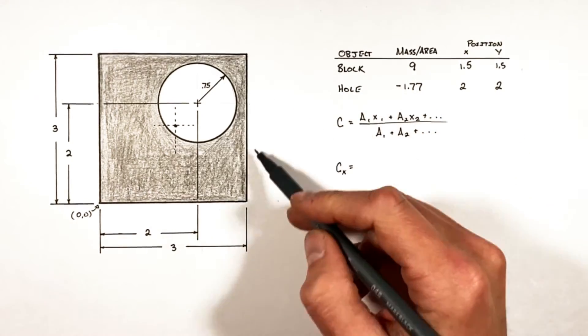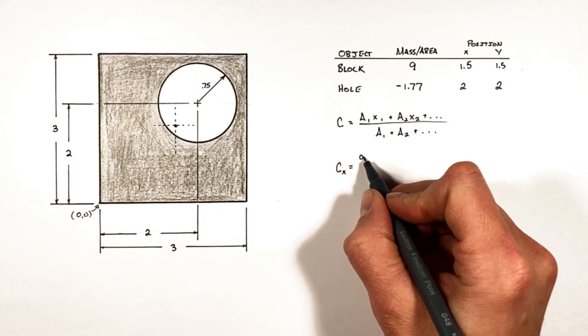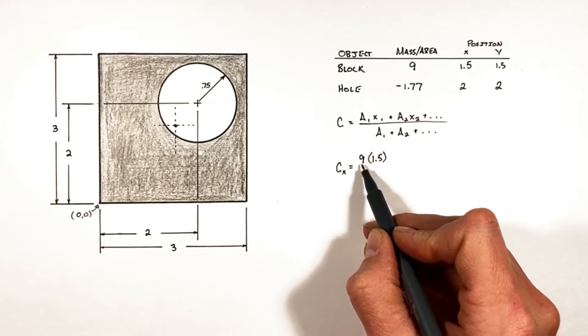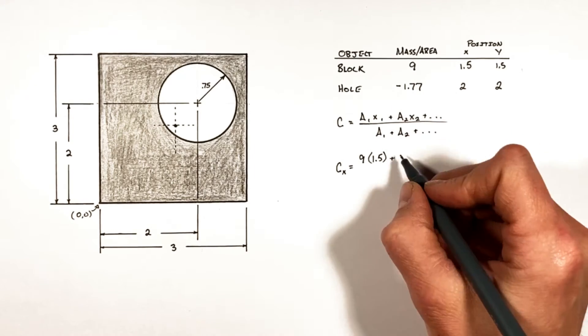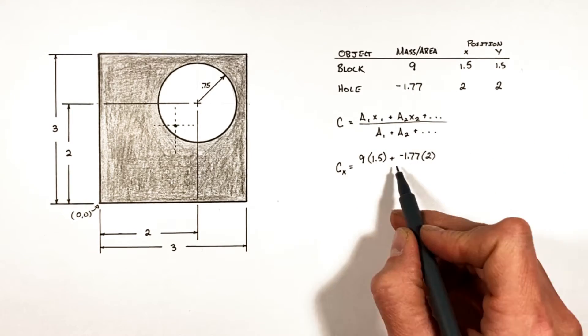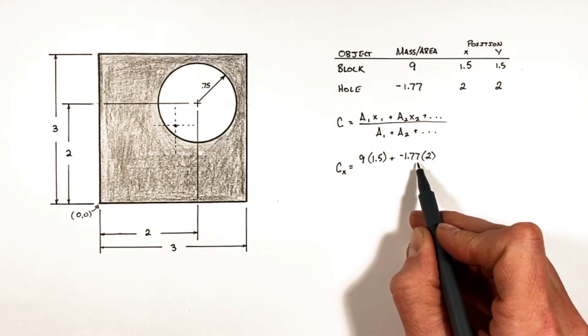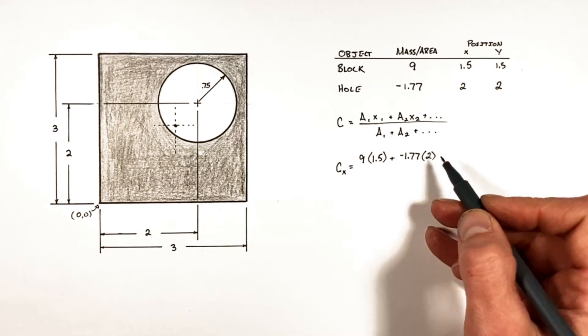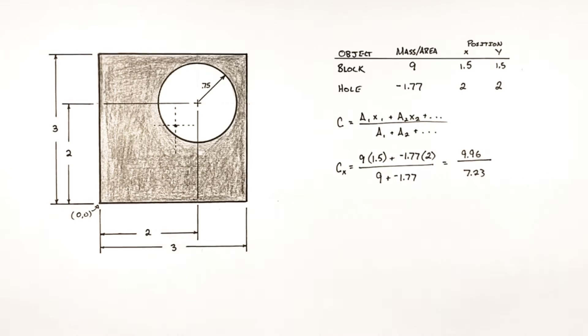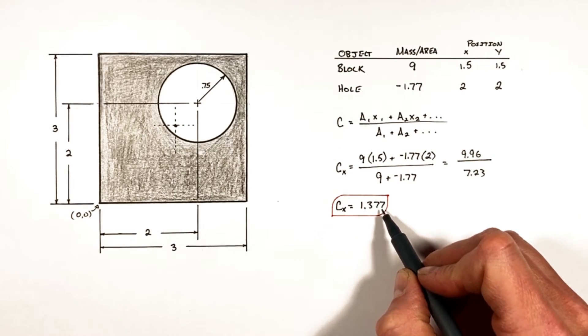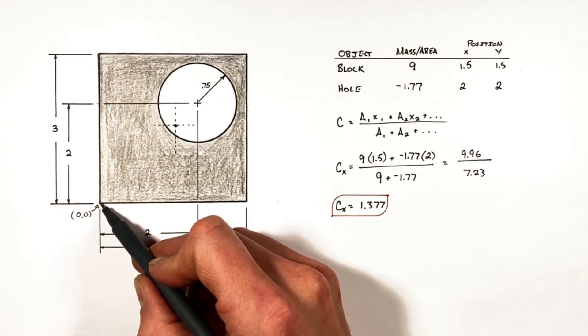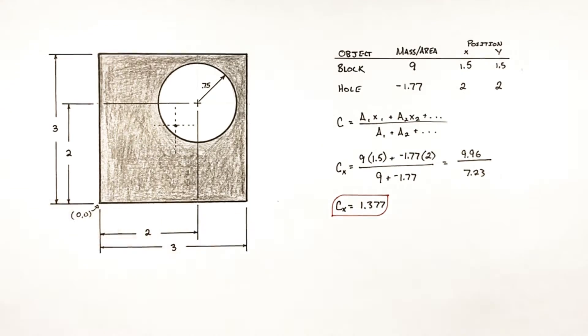Plugging in our values from our table into the equation, first looking at the block itself, the block has an area of 9 and a horizontal position of 1.5. The hole has an area of negative 1.77 and a horizontal position of 2. We find the center of mass in the horizontal axis is going to lie 1.377 to the right of our origin.